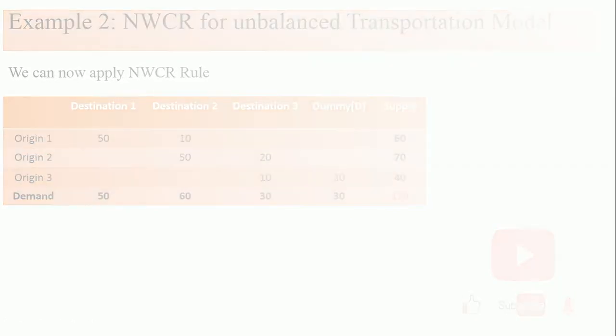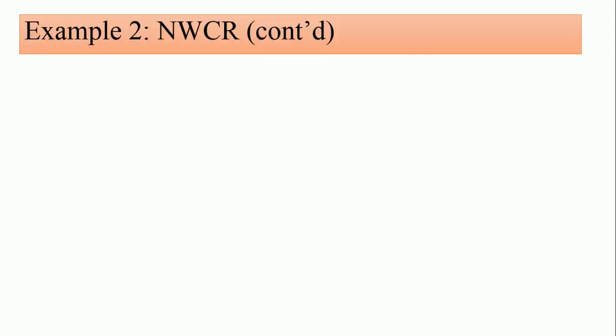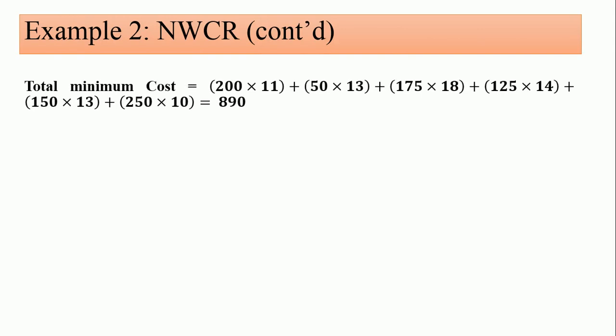And furthermore, we are able to justify the total minimum cost by multiplying the unit cost by those resources allocated into the cells, and we have a total of 890.